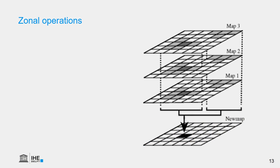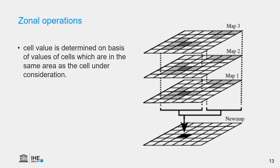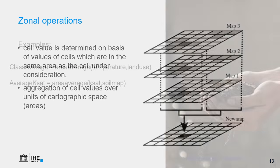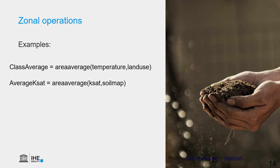Then there are zonal operations. Zonal operations are related to classes to which the pixels belong, and can be used to aggregate cell values over areas — for example, calculating the average or total per land use class. In the first example, we have a continuous map of temperatures and a discrete map, and we want to know the average temperature per land use type, giving us the class average. In hydrology, we often prepare maps with an average value per soil class — for example, using a soil map with discrete classes and saturated hydraulic conductivity as a continuous raster to calculate the average value per soil type.